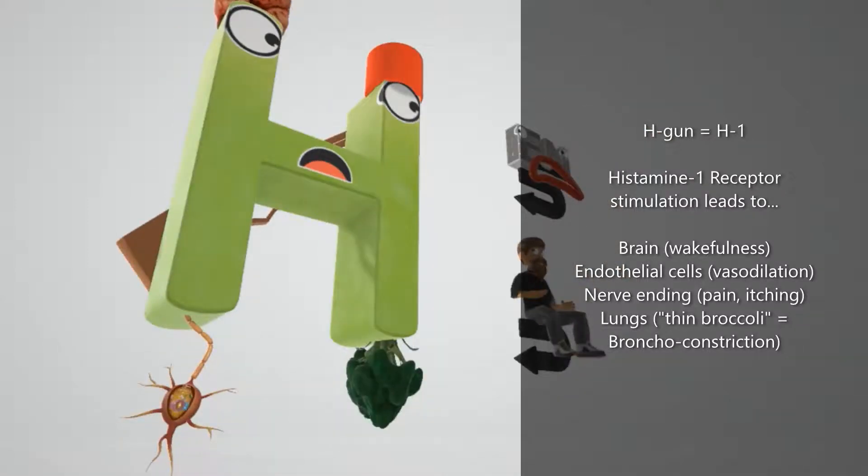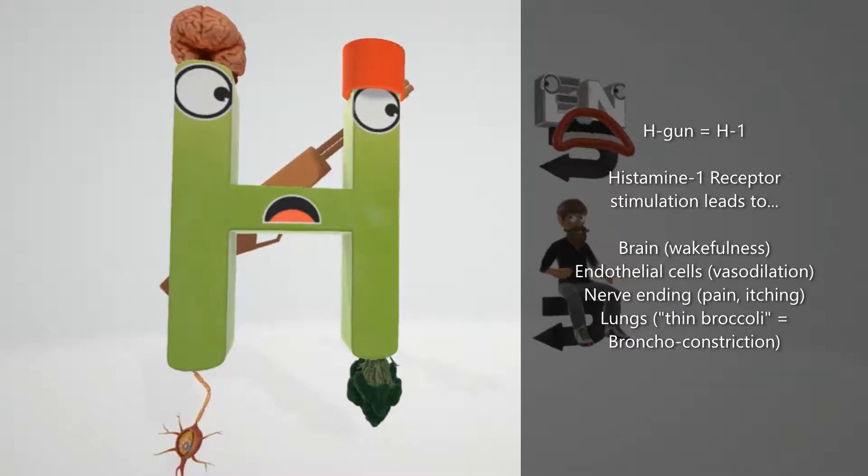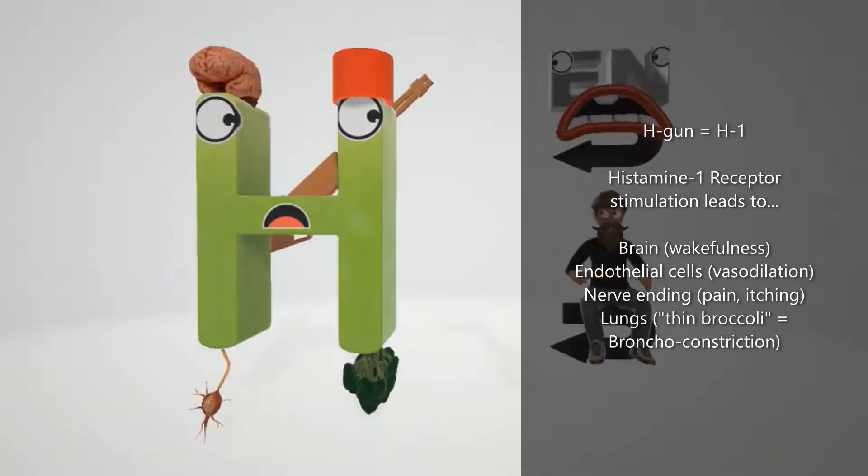We see the nerve over here, the nerve ending. That will remind us that when histamine is activated on the nerve endings, it can cause pain or itching. And we see the thin broccoli that's constricted. That will remind us of bronchoconstriction. Histamine in the lungs can cause bronchoconstriction, and that's why excessive histamine release will lead to things like difficulty breathing.